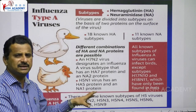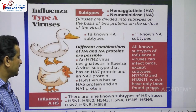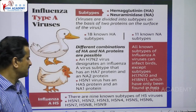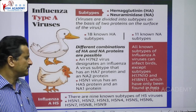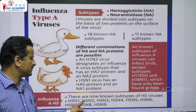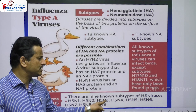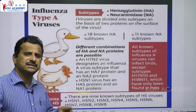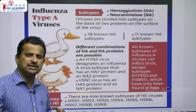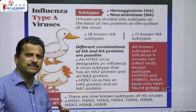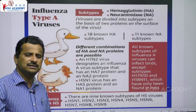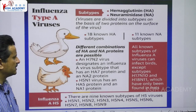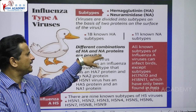Looking at influenza subtypes: there are nine known subtypes of H5 viruses — H5N1, H5N2, H5N3, H5N4, H5N5, H5N6, and so on. Because of mutations, different subtypes can originate, such as H2N2, H3N3, H3N4, H5N7, and many other combinations.